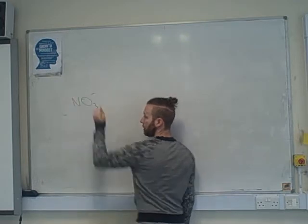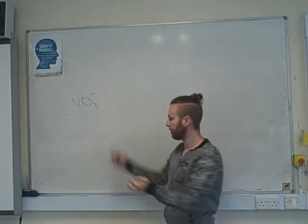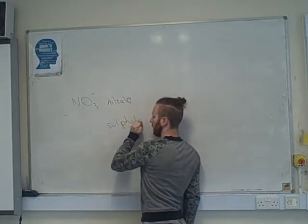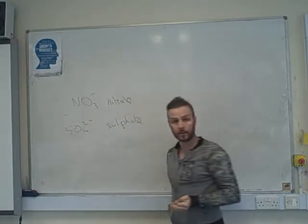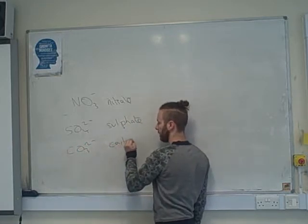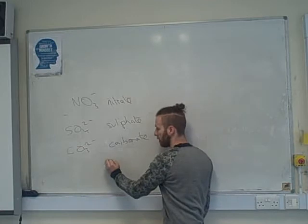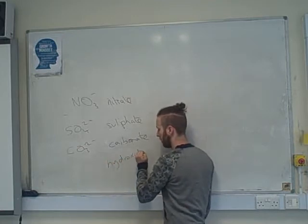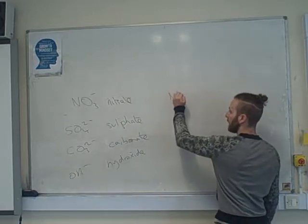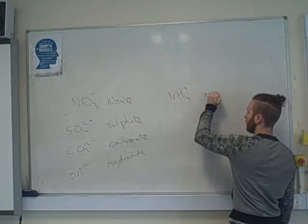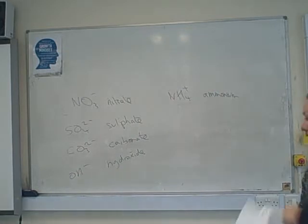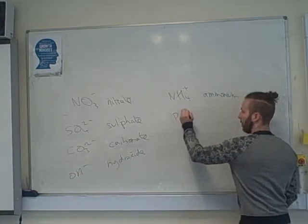So they're as follows. Nitrate, NO3 minus, has a charge of minus. Sulfate is SO4 2 minus. Carbonate is CO3 2 minus. And then hydroxide is OH minus. We've also got ammonium NH4 plus. And phosphate, PO4 3 minus.